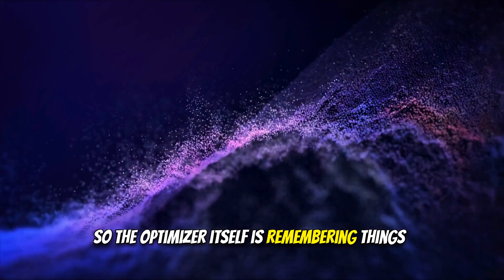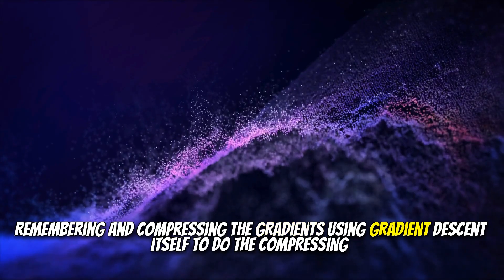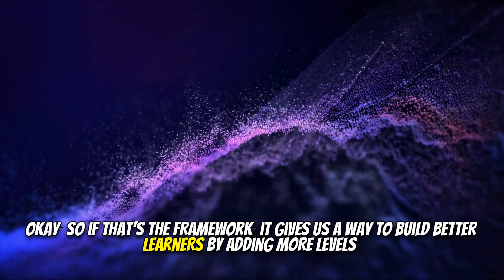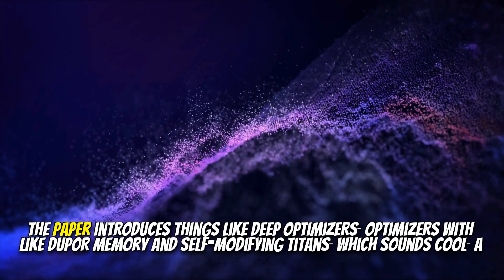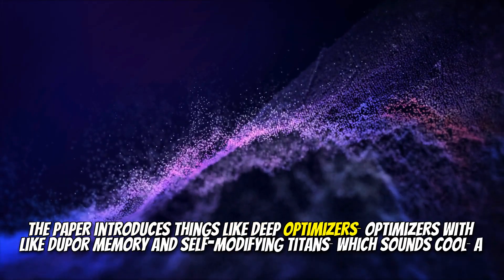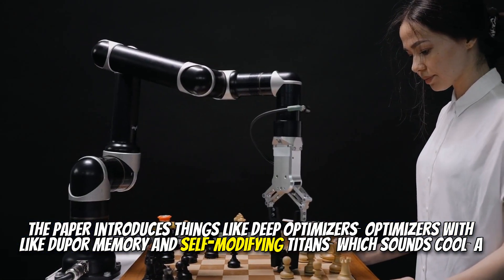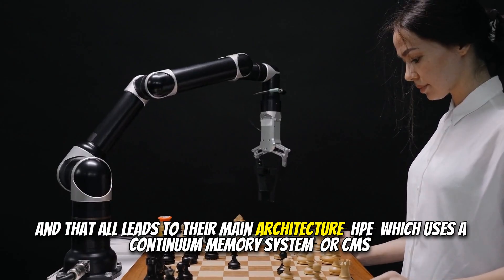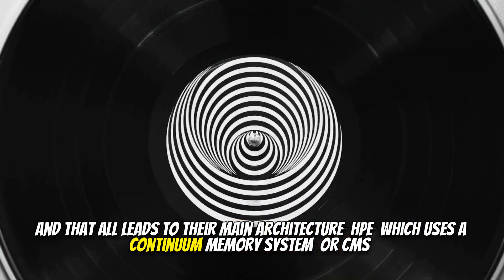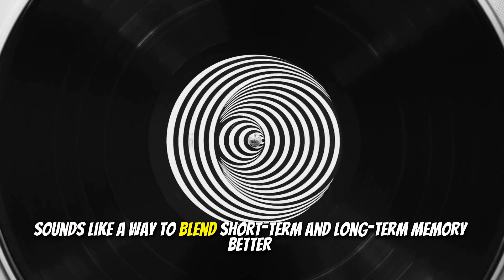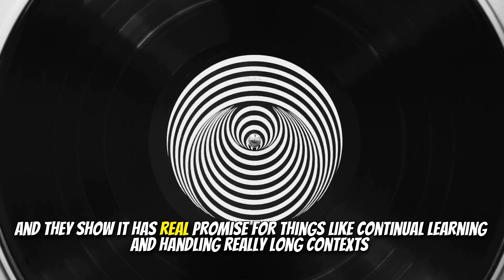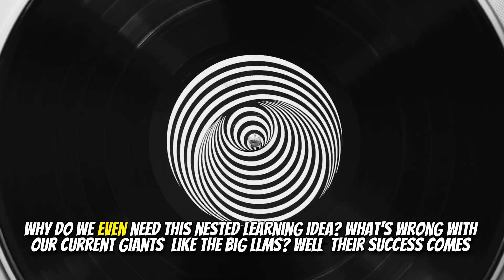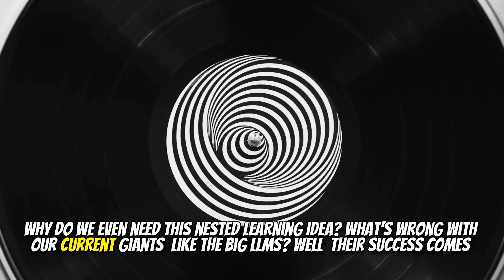Associative memory. So the optimizer itself is remembering things. Precisely. Remembering and compressing the gradients, using gradient descent itself to do the compressing. It's kind of mind-bending. Okay, so if that's the framework, it gives us a way to build better learners, right, by adding more levels. That's the idea. The paper introduces things like deep optimizers, optimizers with, like, deeper memory, and self-modifying titans, which sounds cool, a sequence model that learns how to change its own update rule. And that all leads to their main architecture, HPE, which uses a continuum memory system, or CMS. Sounds like a way to blend short-term and long-term memory better. Yeah, exactly. And they show it has real promise for things like continual learning and handling really long contexts.